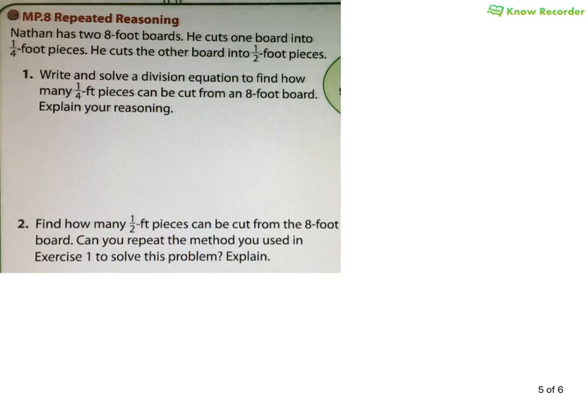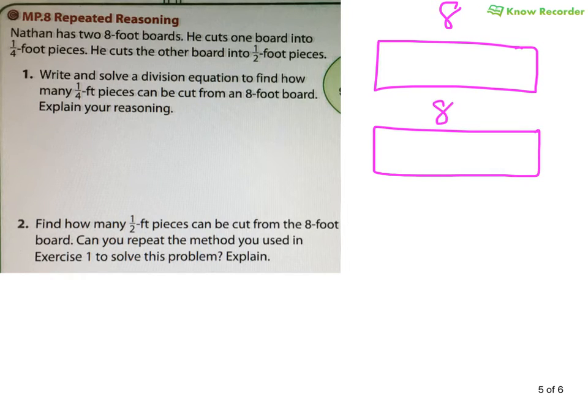This was the question that I screwed up in class at first and then showed you why it was a good way to fix it. And this had to do with the reading carefully. Nathan has two 8-foot boards. So I drew two 8-foot boards. Here's one, it's 8. Here's another, it's 8. He cuts one board into quarter-foot pieces. And I read it fast and what did I do? I cut it into four pieces. And then he cuts the other board in half and that's what I did there. And that's what I did. And that's wrong. Because I didn't read that it's foot pieces. This unit matters. It tells you everything.